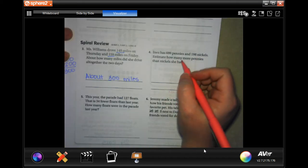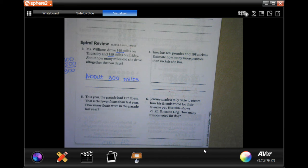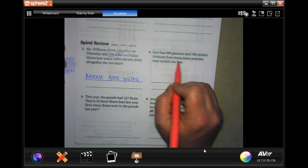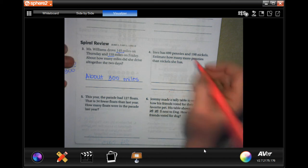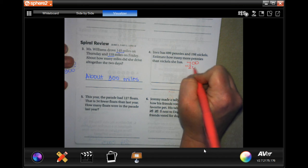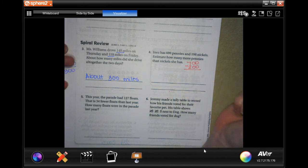Inez has 699 pennies and 198 nickels. Estimate how many more pennies than nickels she has. Well, 699, I would round that to 700. And 198, I would round that to about 200. And we have to find the difference. So, we're going to subtract.